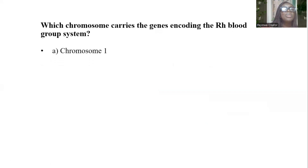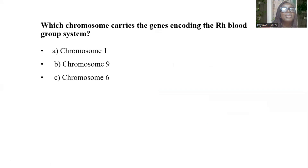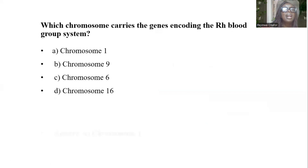Our first question is: which chromosome carries the genes encoding the RH blood group system? The options are chromosome 1, chromosome 9, chromosome 6, and chromosome 16. And the answer is A — chromosome 1.